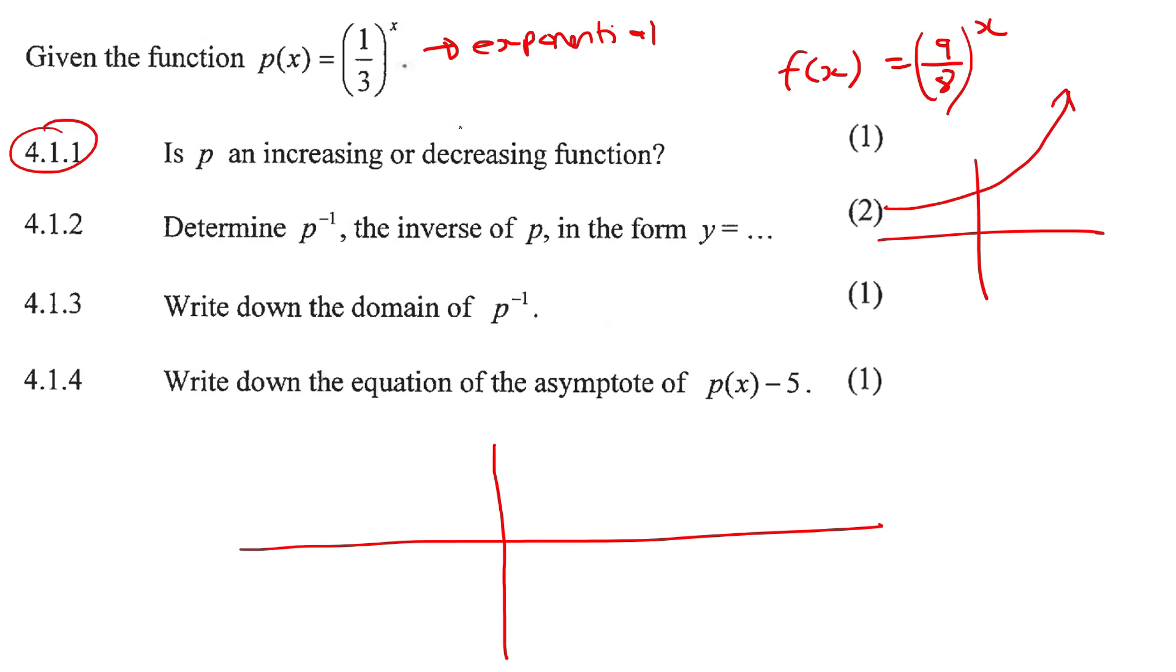When the number is smaller than 1, then it will decrease. So if you had to go type this in your calculator, it would be like 0.3333, so it's smaller than 1, so it would decrease.